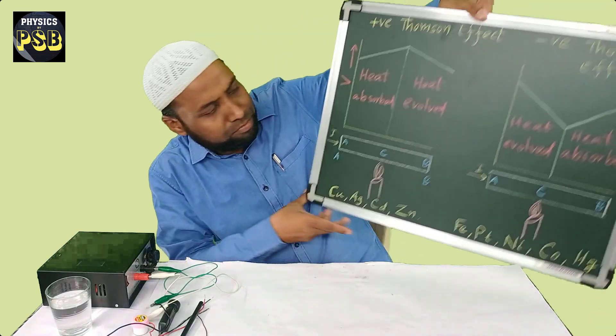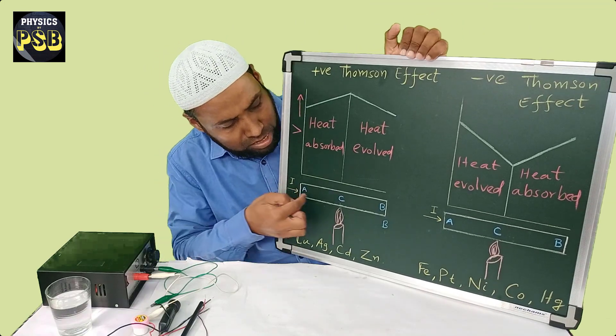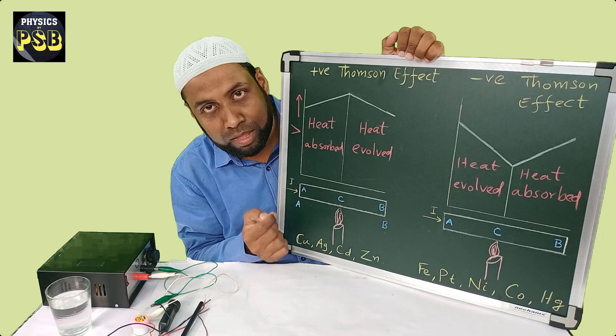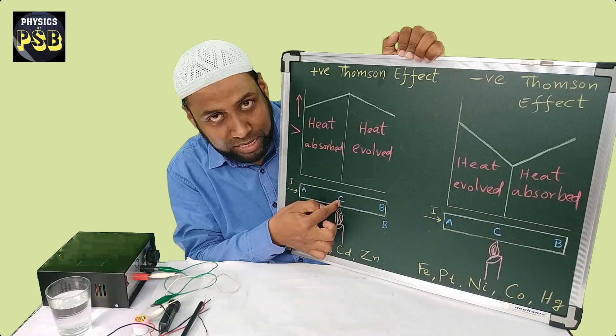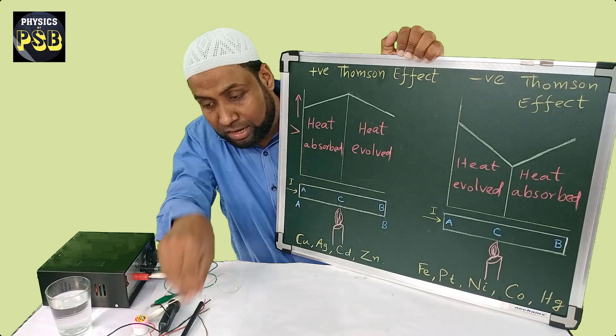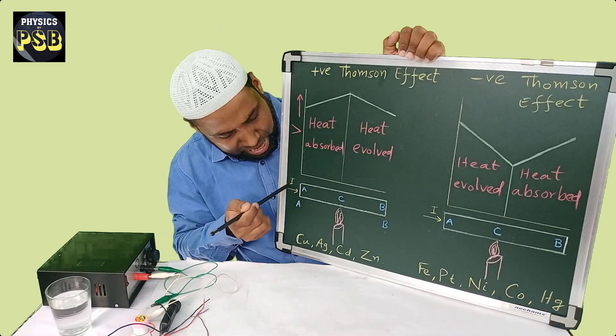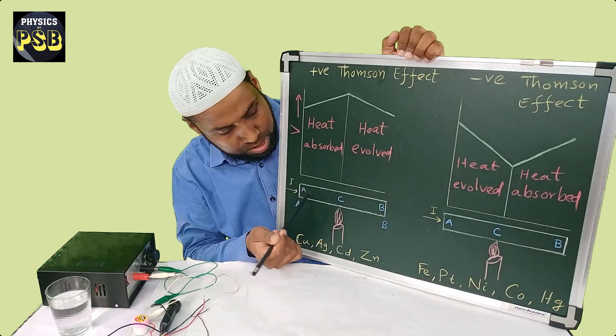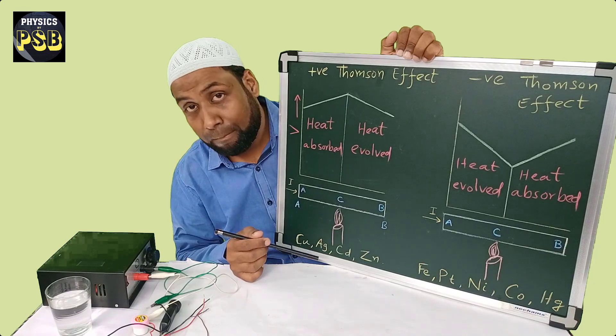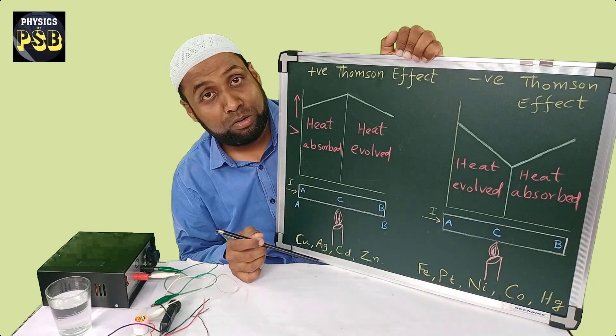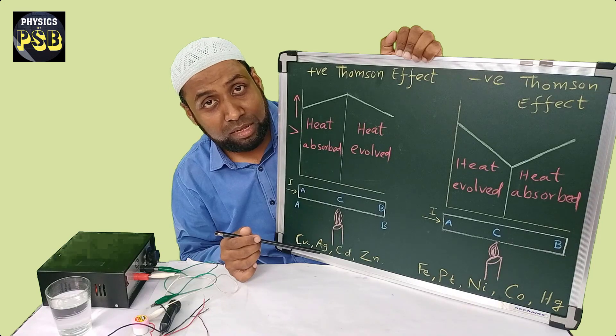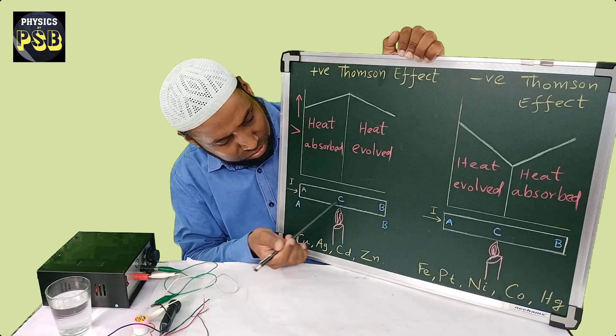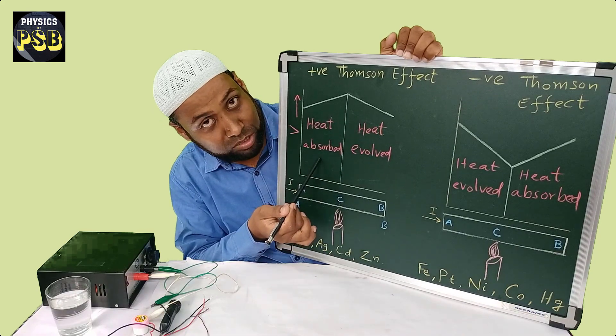For example, if I take a copper bar A B and I heat that at the centre C, then the current I which is flowing through this from A to B, will make this bar A to C, heat will get absorbed.